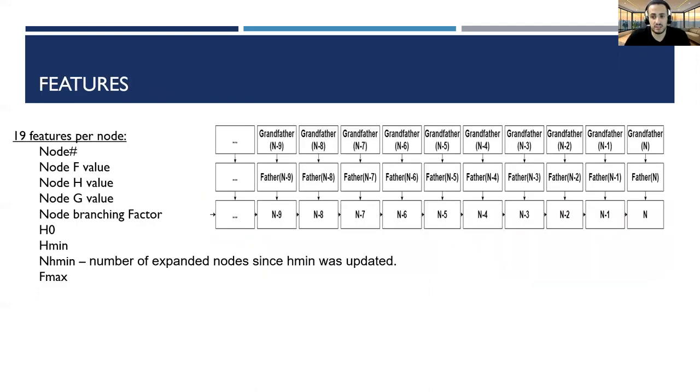The input features are 30 nodes and for each one of them, we took node number to indicate the ID of the node, node F value from the heuristic, node H value for how much is left according to the heuristic, node G value, how many nodes reopened until now, and node factor, how many nodes reopened from the current node. Those features were taken from each node, its parent and grandparent. In total, 15 features.